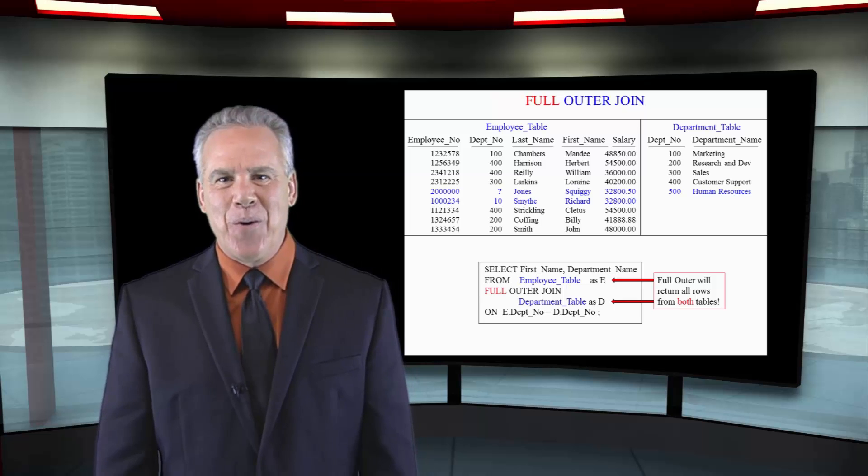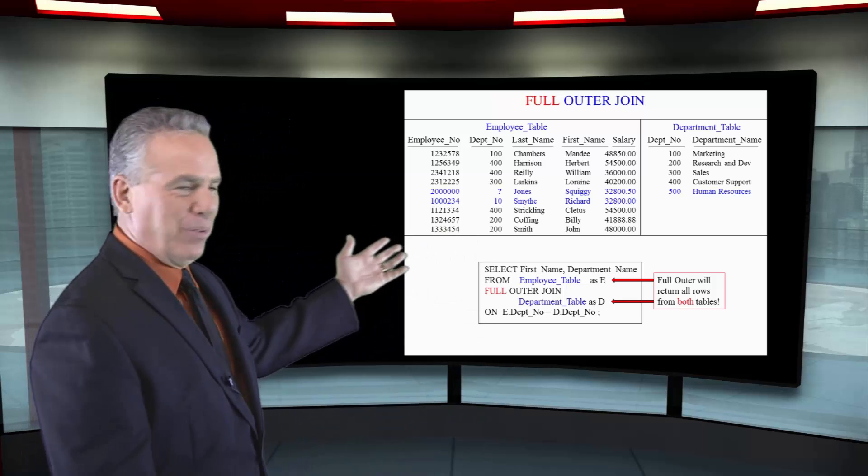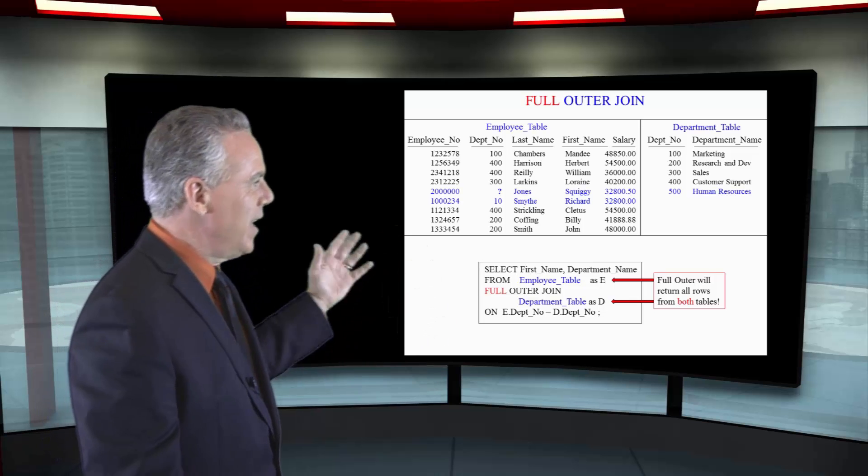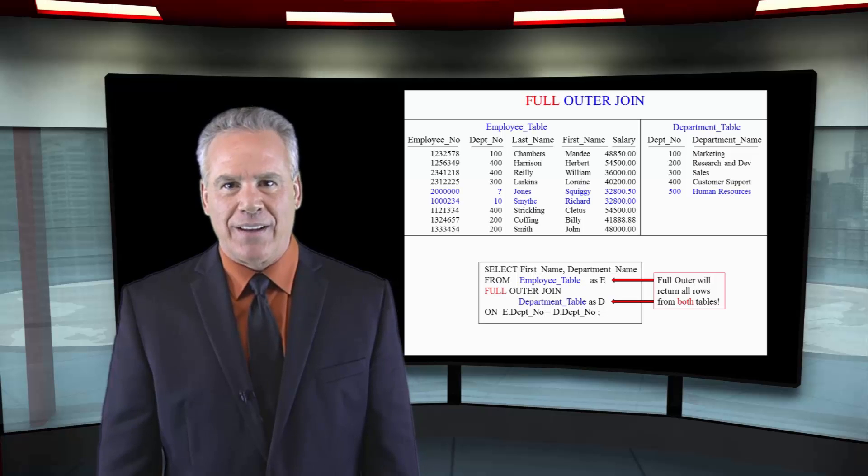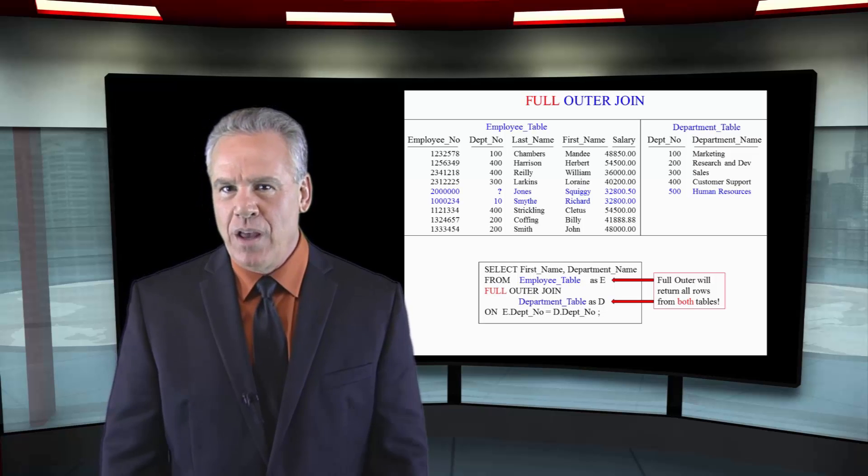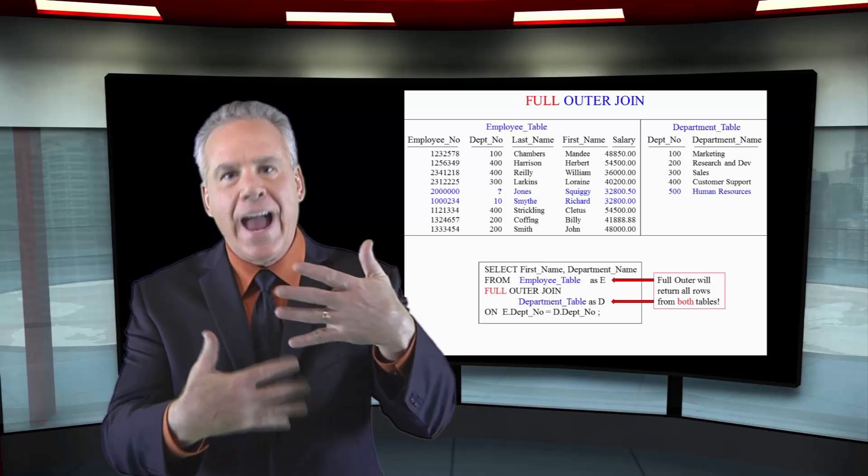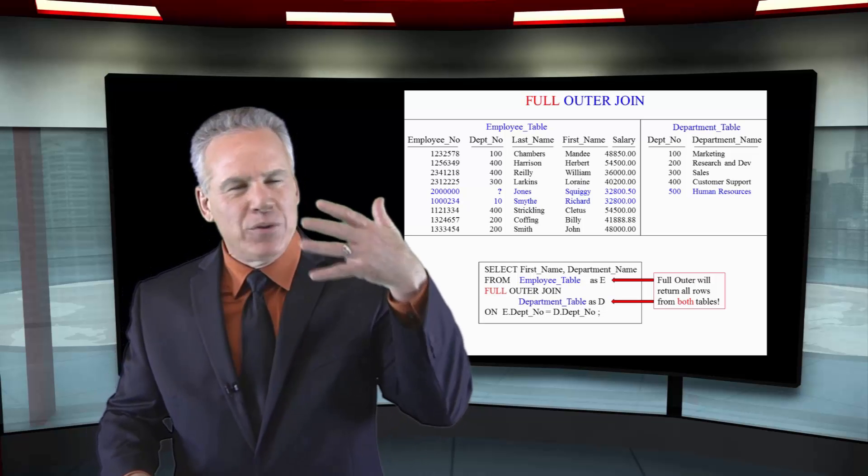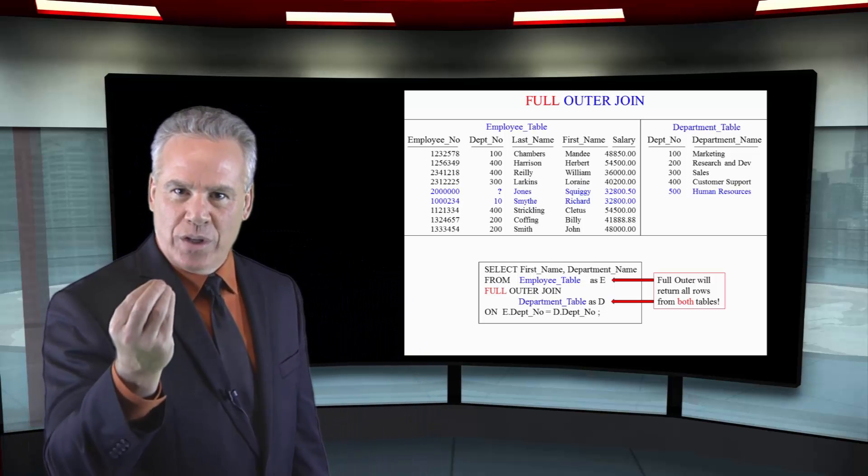Now we're going to do a full outer join from two tables: the employee table, full outer join, the department table. All rows are coming back. Think about it this way: both the employee table and the department table are the outer tables. The employee table is still the left table and the department table is still the right table, but we want a full outer join.